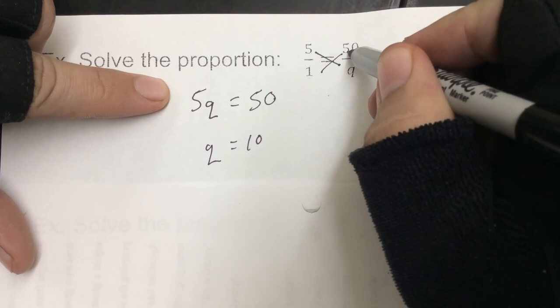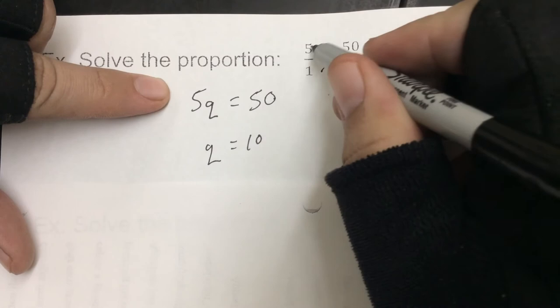So, in other words, you're going to do 1 times 50 for the cross, and then divide by the one that's opposite of the letter. So, 1 times 50 is 50, divided by 5 gives us 10.